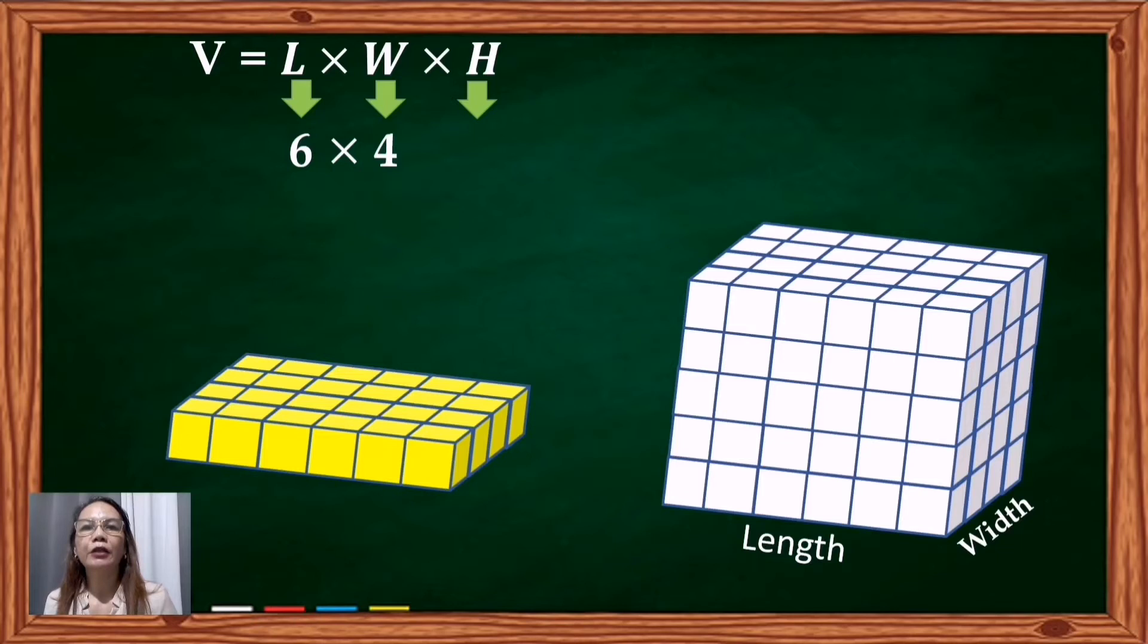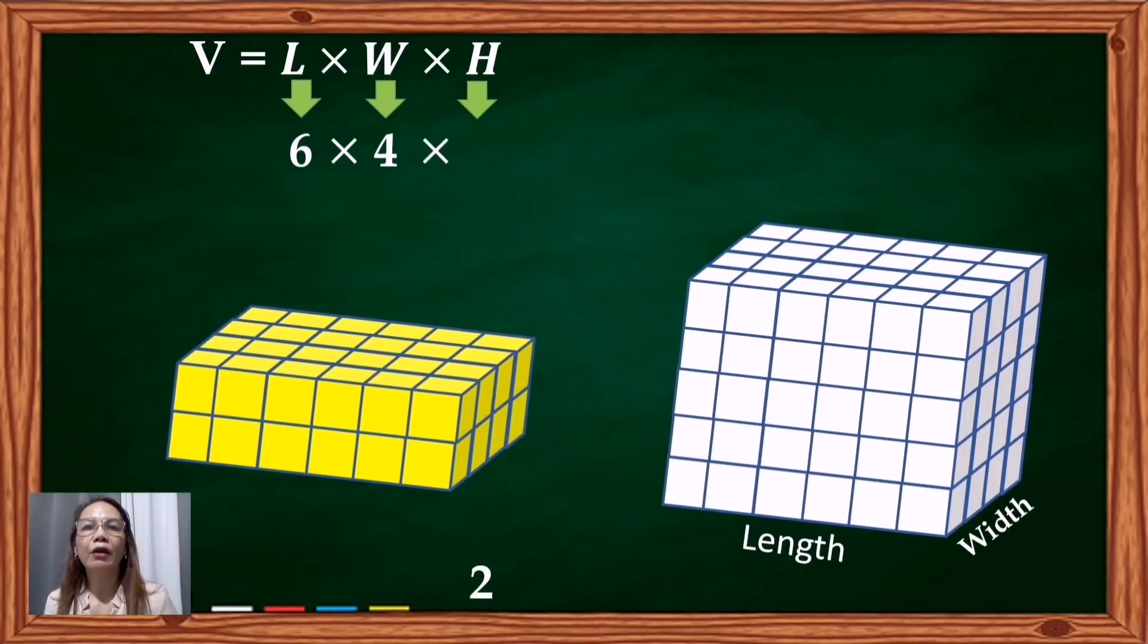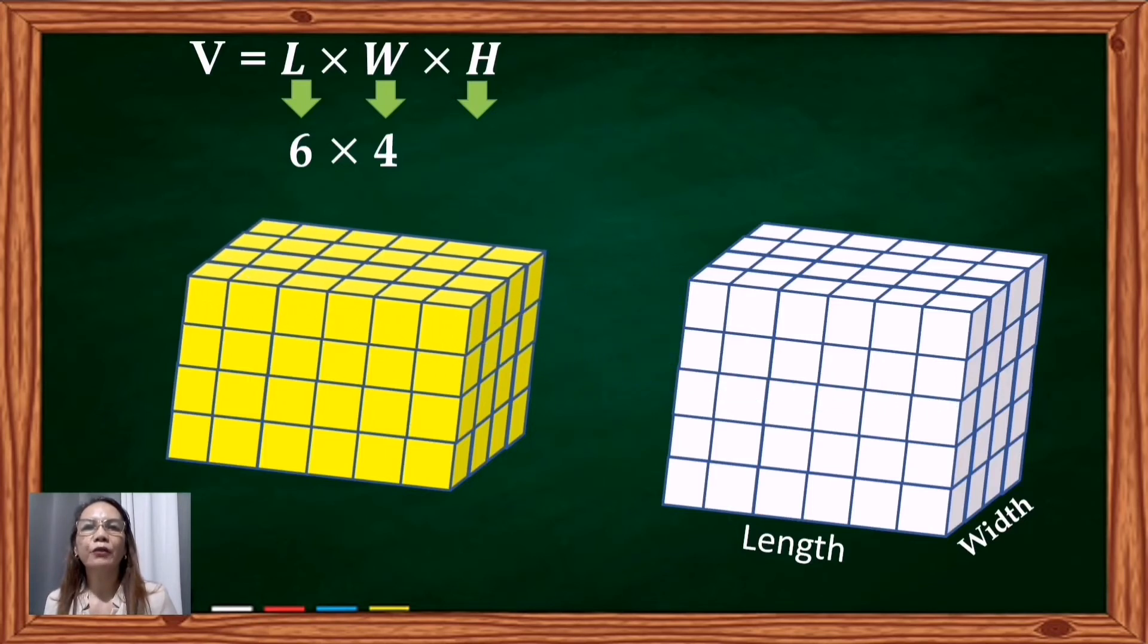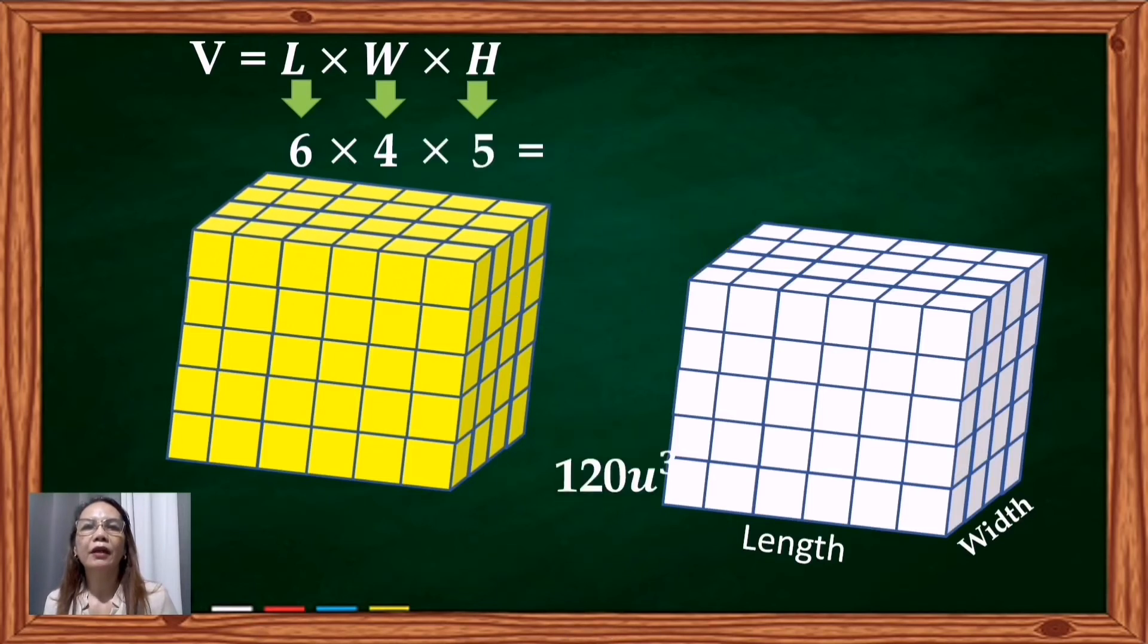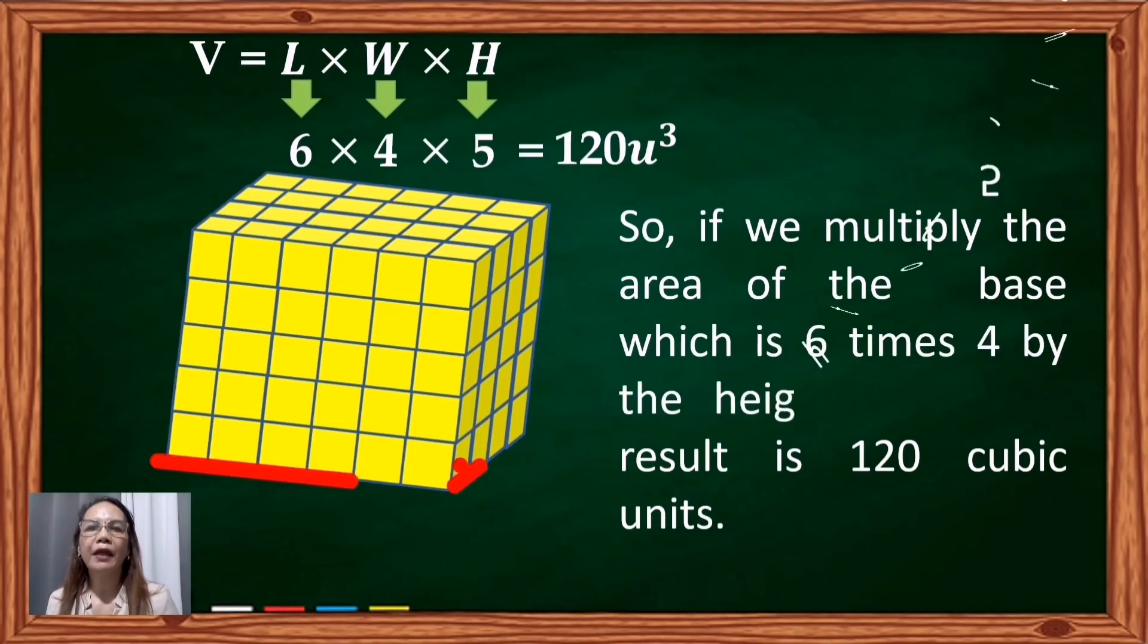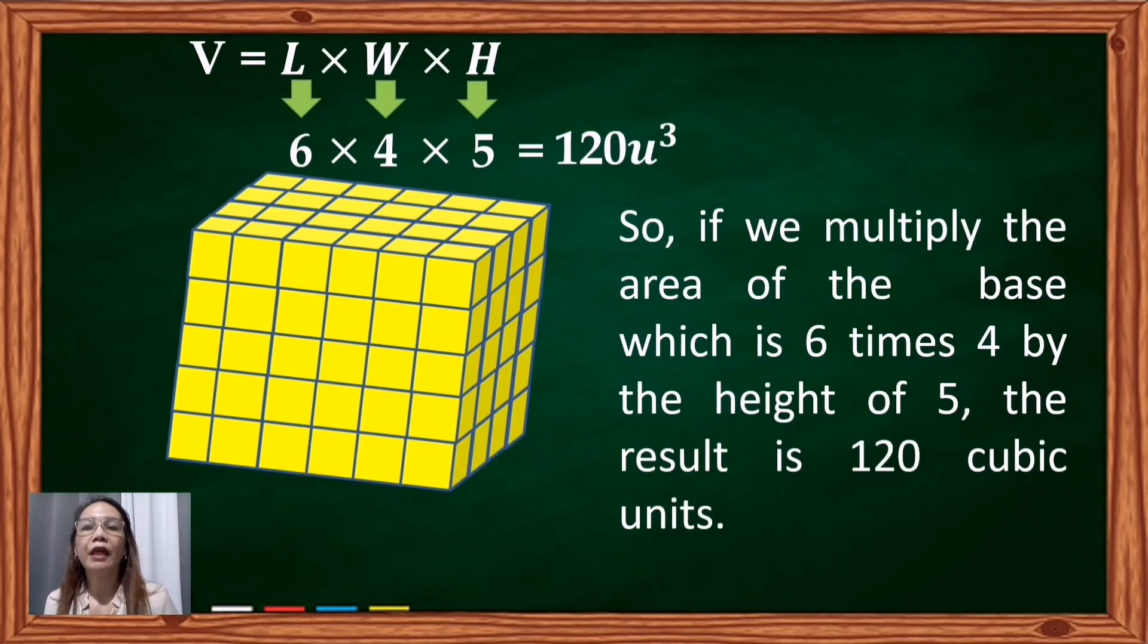Adding two levels of 24, we would get a level of 48 cubic units. Three levels of 24 will give us 72 cubic units. Then four levels of 24 gives us 96 units. And of course, five levels of 24 will give us 120 cubic units. So if we multiply the area of the base, which is 6 times 4 by the height of 5, the result is 120 cubic units.